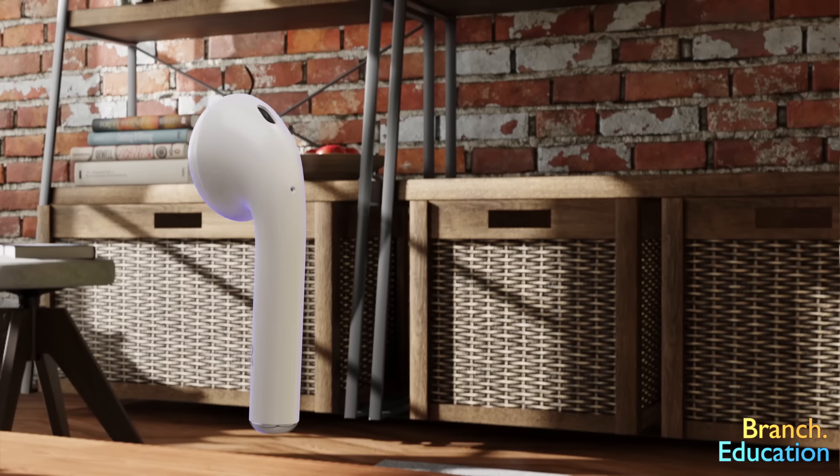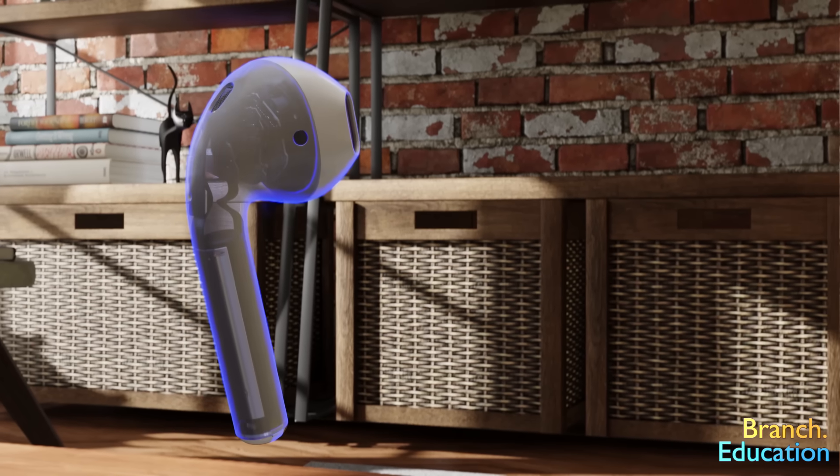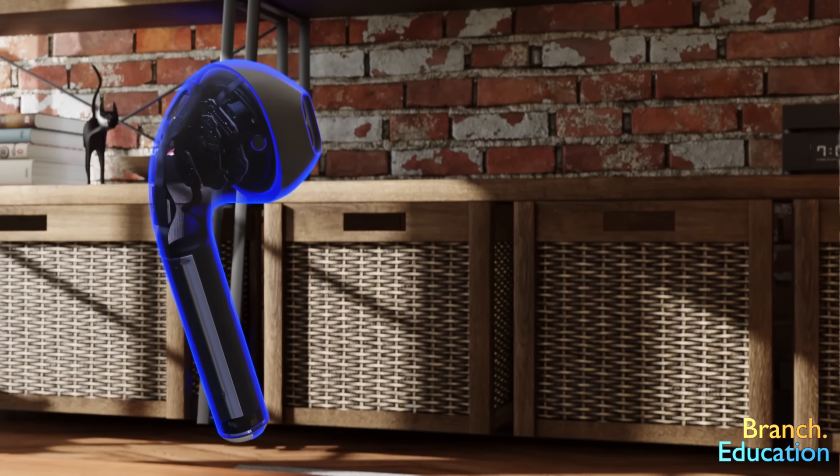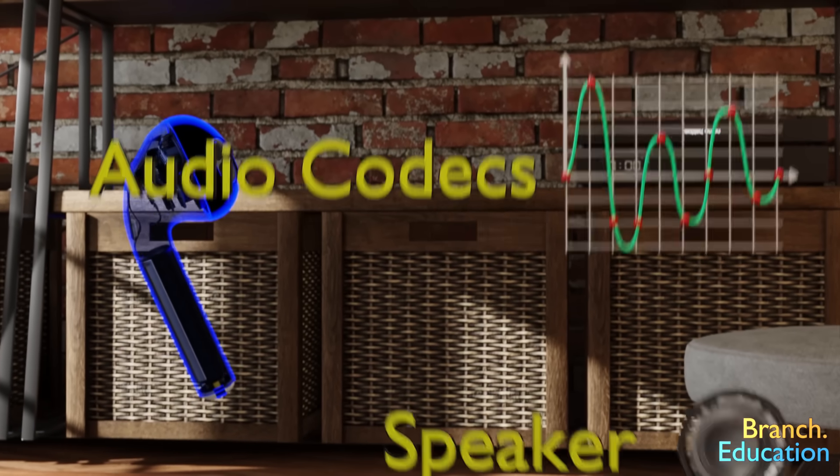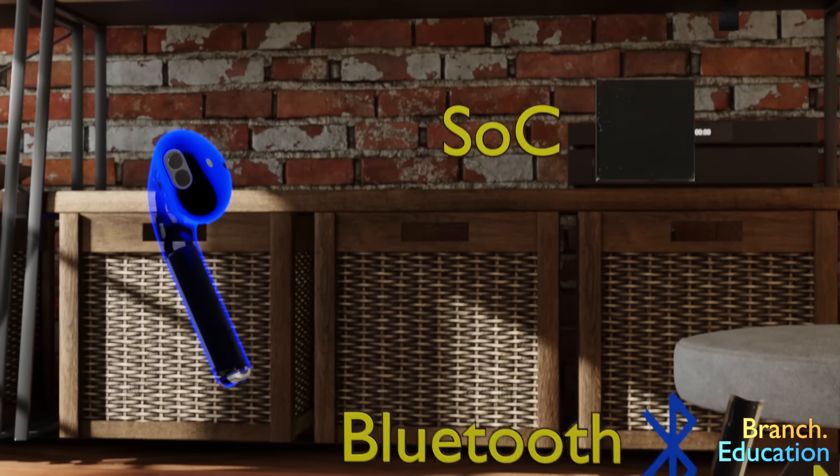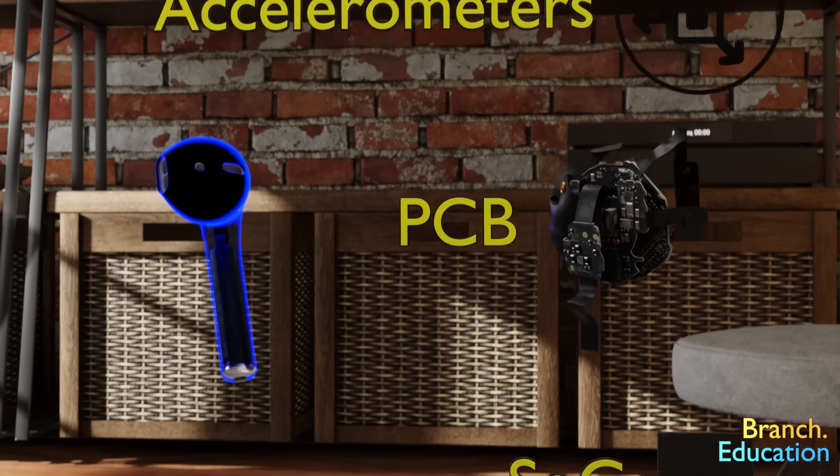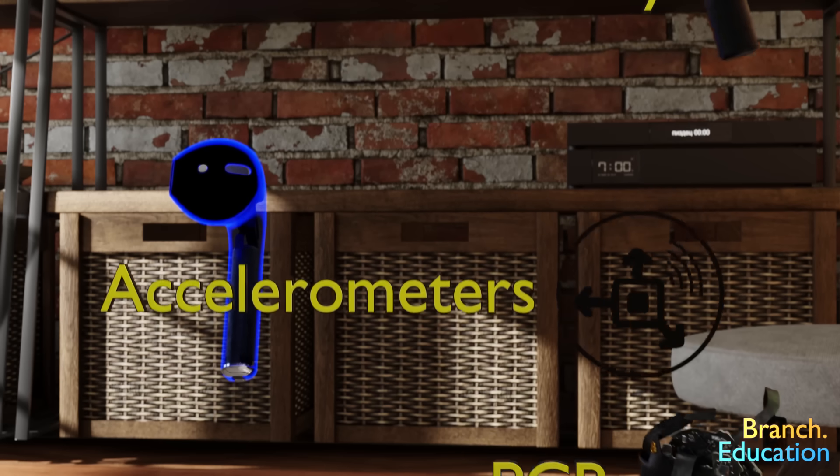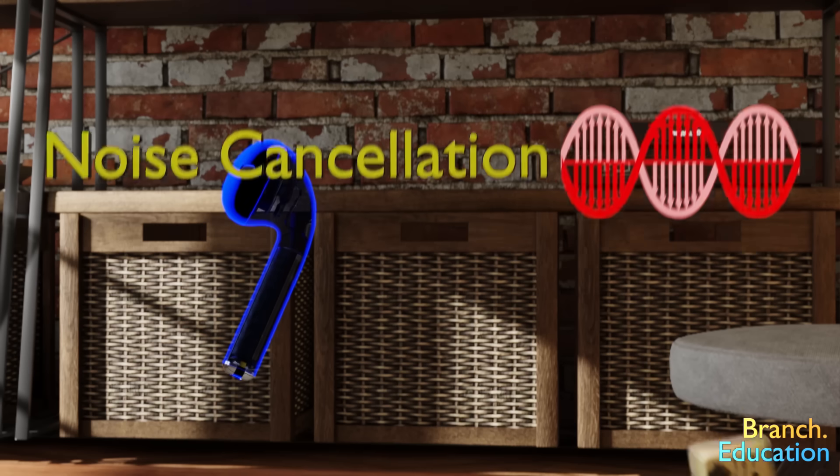Wireless headphones are incredibly complex, and inside these tiny plastic earbuds, there are nine distinct technologies that we're going to explore. These technologies are the speaker, audio codecs, Bluetooth, the system on a chip or SOC, the printed circuit board or PCB, accelerometers, the lithium-ion battery, MEMS microphones, and noise cancellation.